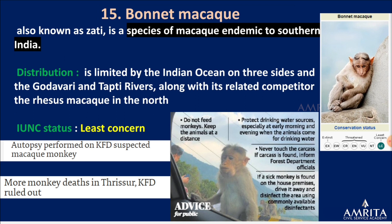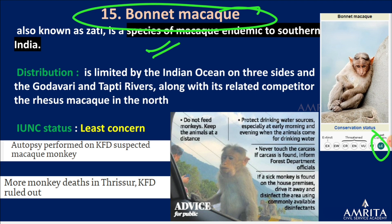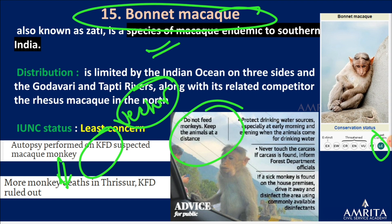Bonnet macaque — a species of monkey, least concern — was in the news because they were suspected of having Kyasanur Forest Disease (KFD), a vector-borne disease. Finally it was confirmed they were not dying from KFD. They are endemic to southern India.